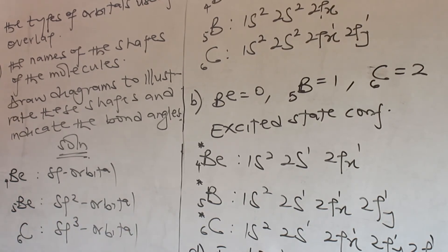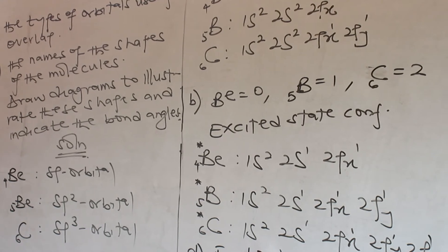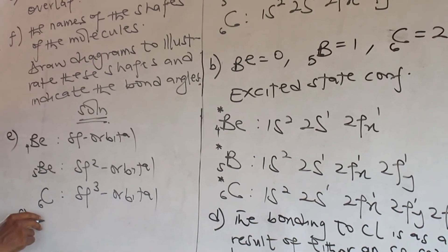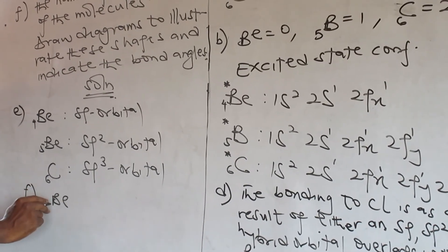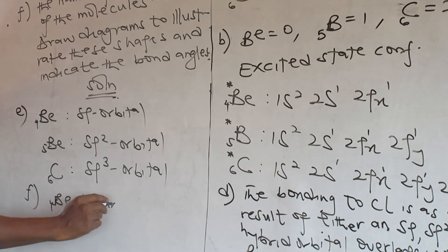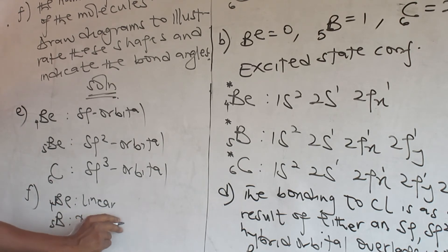The names of the shapes of the molecule. So this is linear. Boron is trigonal planar. Carbon is tetrahedral.